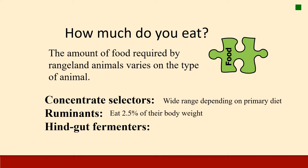Ruminants eat about 2.5% of their body weight each day. A thousand-pound cow, for example, would eat about 25 pounds of forage per day. Hindgut fermenters eat about 3% of their body weight, so an 1,100-pound horse would eat about 33 pounds per day — a little more than ruminants and concentrate selectors. These are general estimates of forage intake for these different animal types.